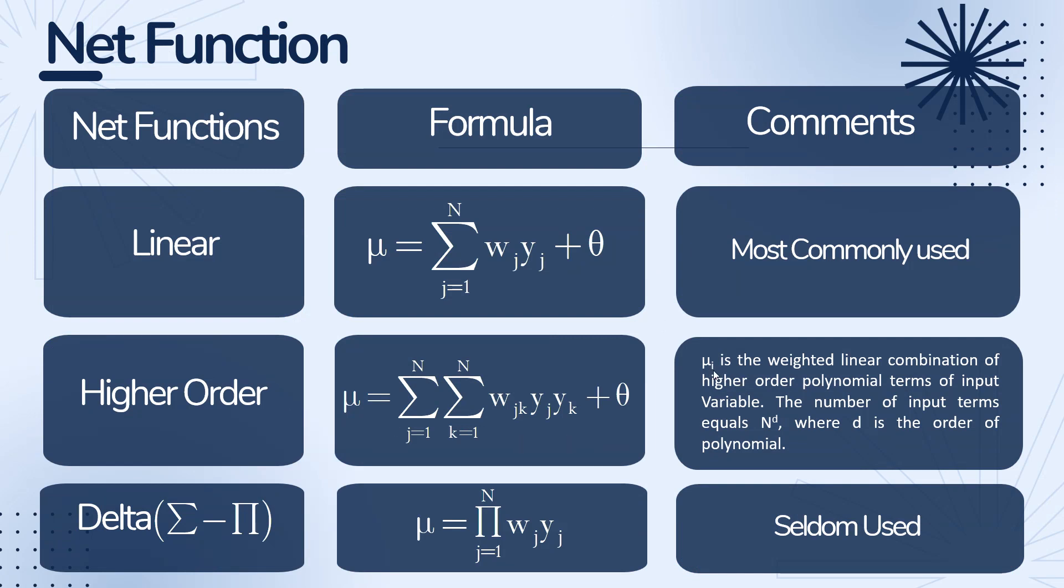As you can see in the description, mu_i is the weighted linear combination of higher order polynomial terms of input variables. The number of input variables equals n^d where d is the order of the polynomial. So the third type is delta, this is seldom used.